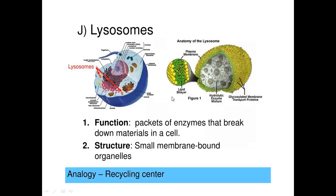Looking at the picture of the lysosome in cross-section, you can see the presence of a hydrolytic enzyme mixture inside. There are varieties of enzymes present inside the lumen of the lysosome. The membrane here is a quite distinct type — the lysosomal membrane is very well glycosylated, meaning it is coated with carbohydrates. This is essential for protecting the membrane from the lysosomal enzymes.